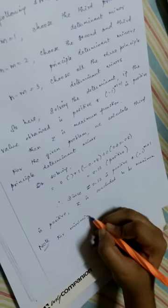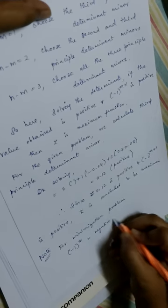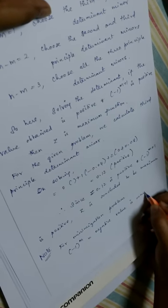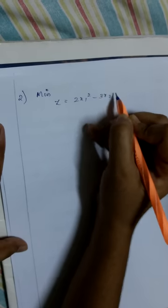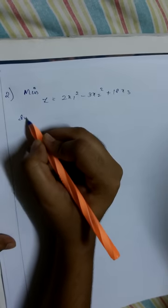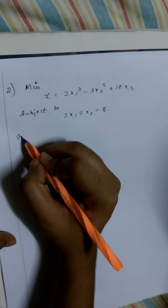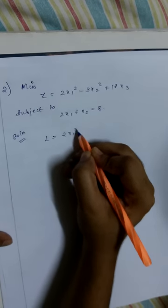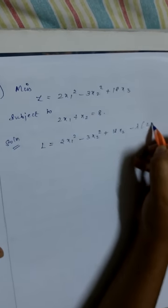For a minimization problem, we take minus 1 to the power m. Here is a second example of the Lagrangian method: minimize z equal to 2x1 squared minus 3x2 squared plus 18x2, subject to the constraint 2x1 plus x2 equal to 8. We find the Lagrangian L equal to 2x1 squared minus 3x2 squared plus 18x2 minus lambda into 2x1 plus x2 minus 8.